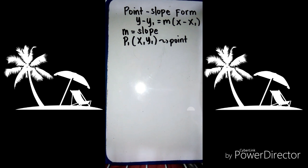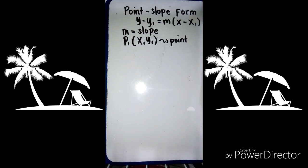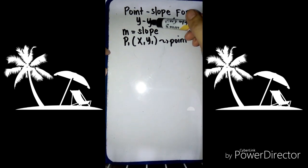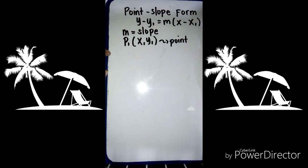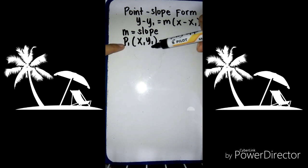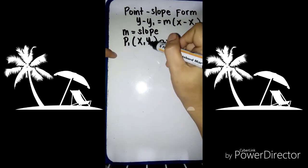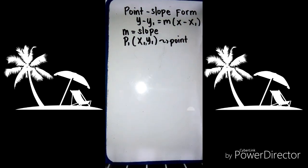In this lesson, we're going to study how to find the equation of the line of the form y equals mx plus b, given the slope and a point. This is what we call the point-slope form, wherein we have y minus y sub 1 equals m times x minus x sub 1. Here, m is the slope and the point is (x sub 1, y sub 1).